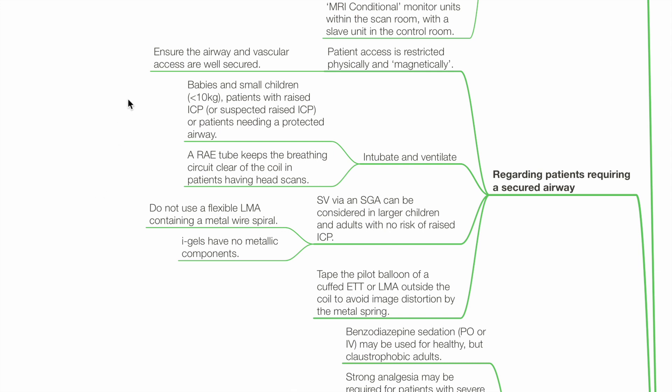Babies and small children less than 10 kg, patients with raised ICP, or patients needing a protected airway should be intubated and ventilated. A RAE tube keeps the breathing circuit clear of the coil in patients having head scans. Spontaneous ventilation via a supraglottic airway device can be considered in larger children and adults with no risk of raised ICP.